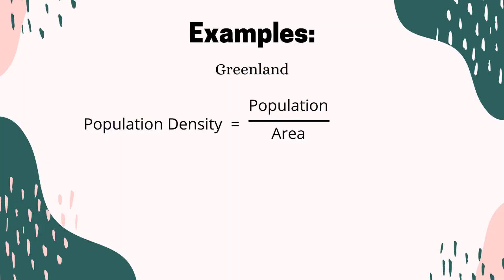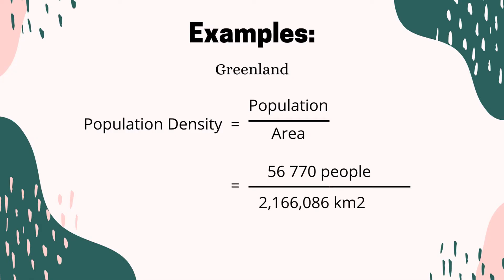Let's do a third example — a country which is very sparsely populated: Greenland. Currently there are about 56,770 people living in Greenland, and the total area of this country is 2,166,086 square kilometres. Putting that in our calculator gives an answer of 0.026 people per square kilometre.